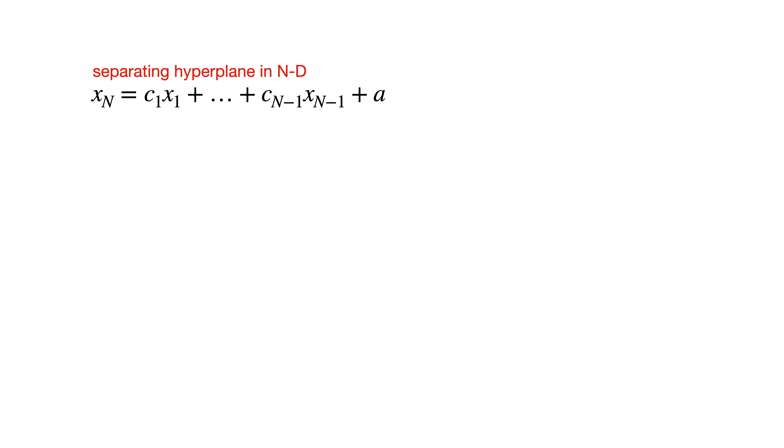If we subtract x_n from both sides, we can rewrite this as 0 equals c1 times x1 yada yada yada plus an offset. And if we multiply both sides of that equation by a constant k, we get 0 equals k times c1 times x1 plus… well, you get it. Of course, a constant times a coefficient is just a different coefficient, and a constant times an offset is just a different offset. So we can rewrite this equation like this, where we usually call the w terms weights. This is the canonical form of a hyperplane in n-dimensional space.